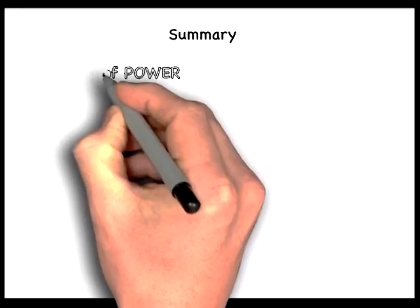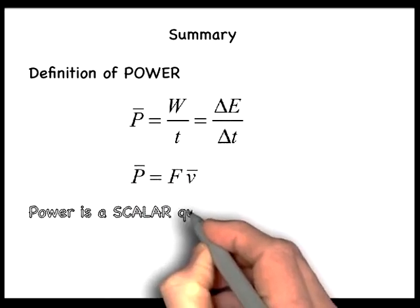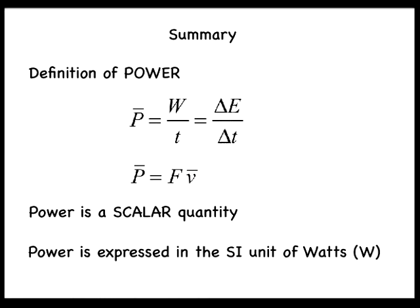In summary, the average power equals the work divided by the time it takes to do it, or through the work energy theorem, the change in energy divided by the change in time. It can also be expressed as the product of the force and the average speed. Power is a scalar quantity, and its SI unit is the joule per second, or the watt.